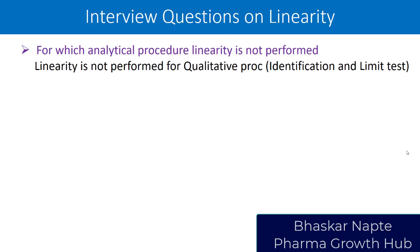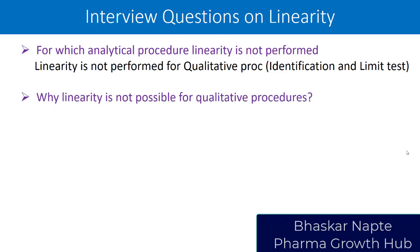When we give the answer to the interviewer that for qualitative procedures like identification and limit tests linearity is not performed, the obvious next question could be: please tell me why linearity is not possible for qualitative procedures like identification tests or the limit test for an impurity.